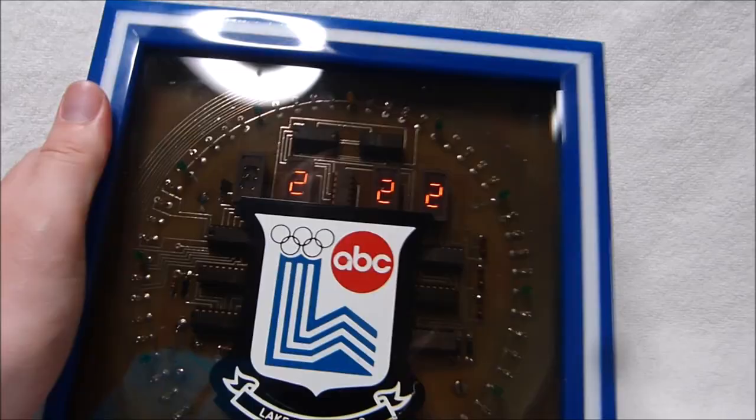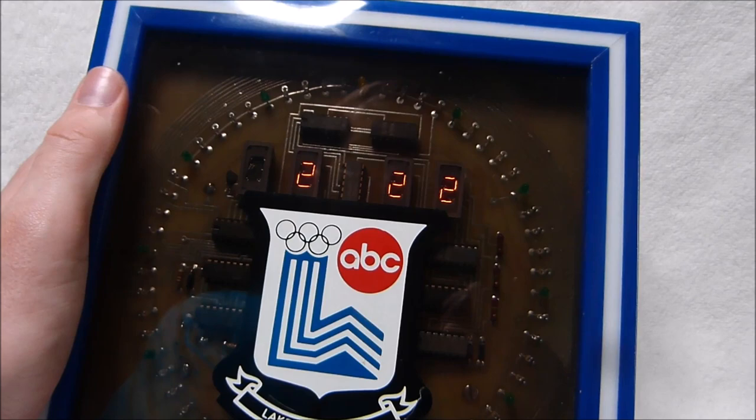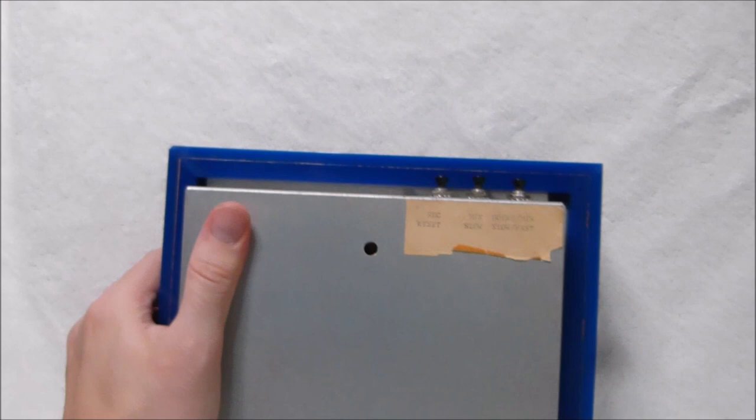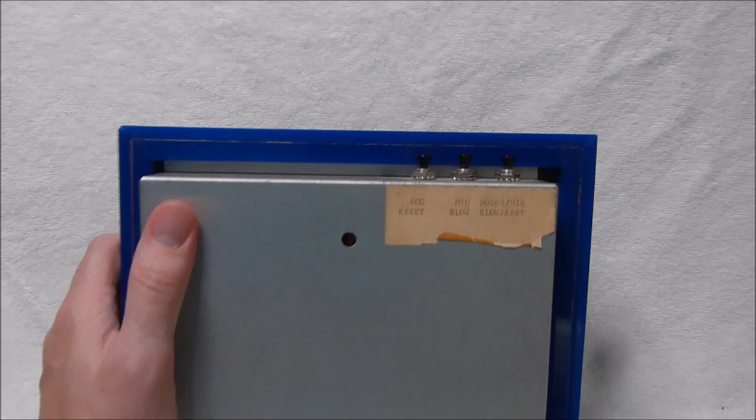Now the seller told me that the original owner was their uncle who was a trainer at the 1980 Olympics but they did not say what sport they were a trainer in. I may try to get that information from them. It would be a real lucky break if this clock belonged to one of the trainers for the hockey team. That would really cement the Miracle on Ice connection.